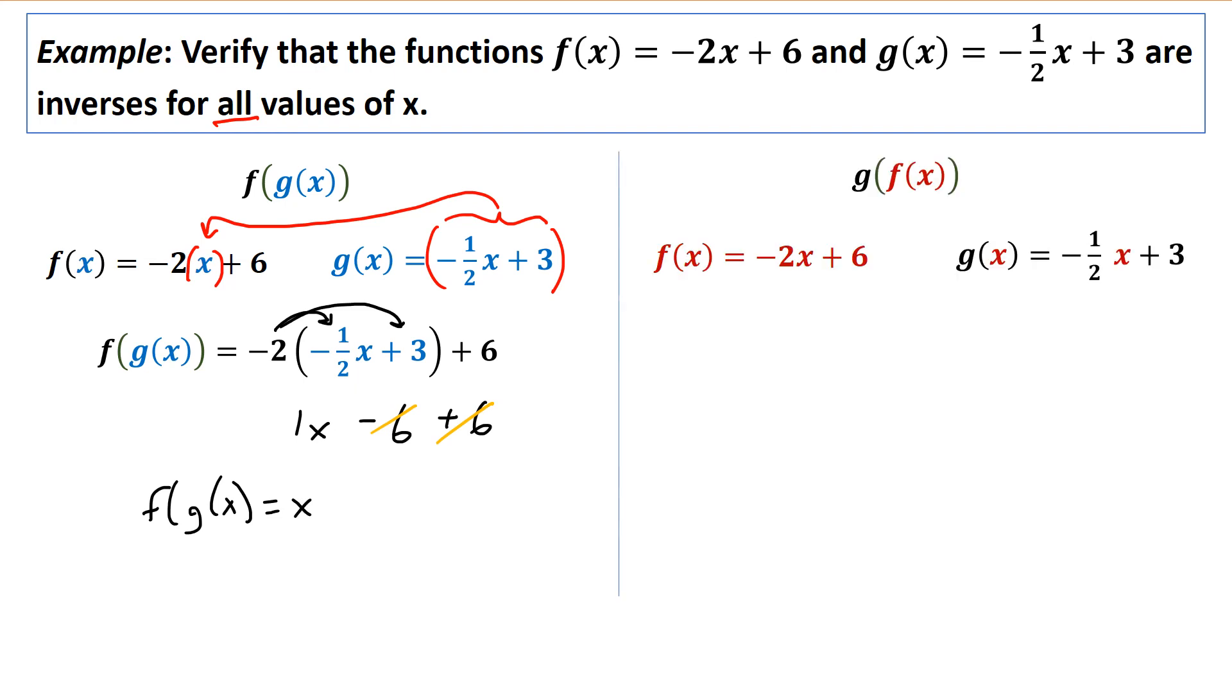And now we have to do the same except find g of f of x. So I'm going to take f(x). Remember you start from the inside, work your way out, and substitute it into g(x). So f(x) gets substituted into g(x), and that's what I'm left with. Distribute the negative 1 half, and we get 1x minus 3 plus 3. And negative 3 plus 3 is 0. So g of f of x equals x.